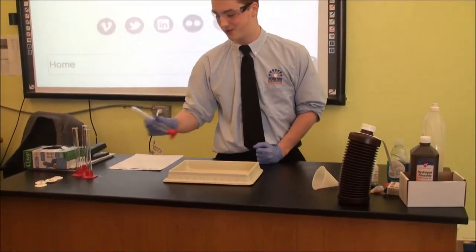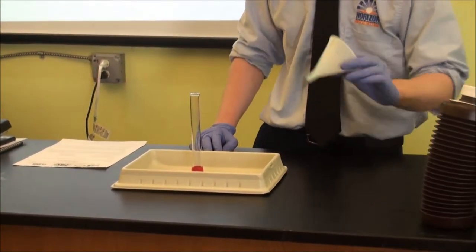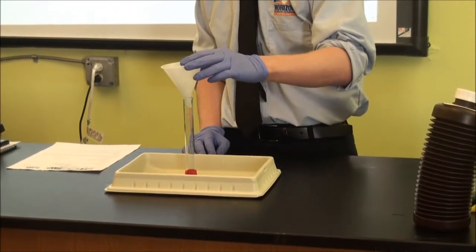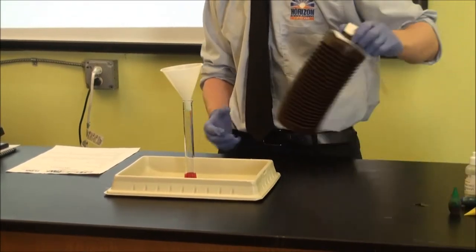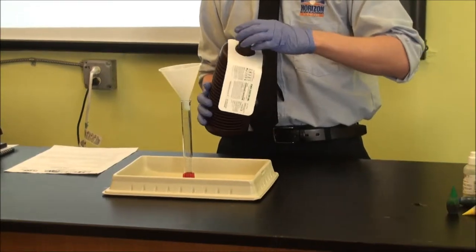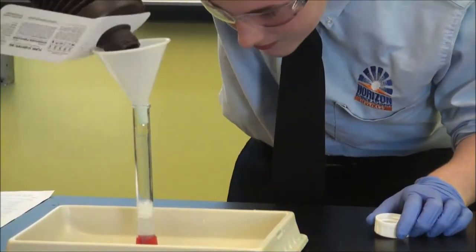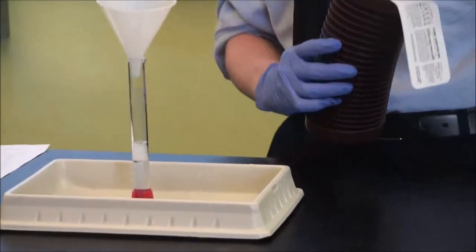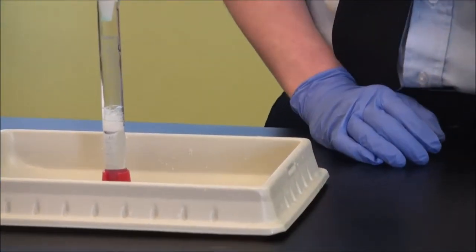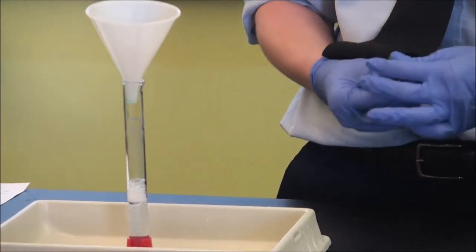We start off with our cylinder and we can use our funnel to pour 10 milliliters of hydrogen peroxide, and then put the food coloring in as much as you like.